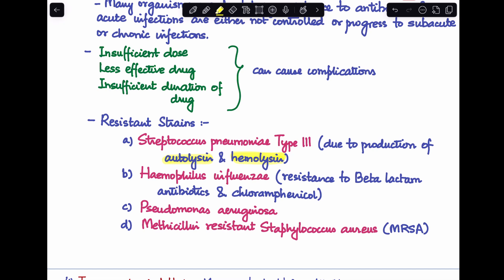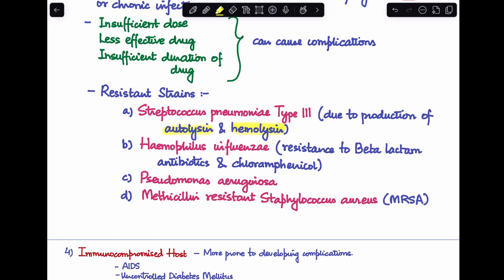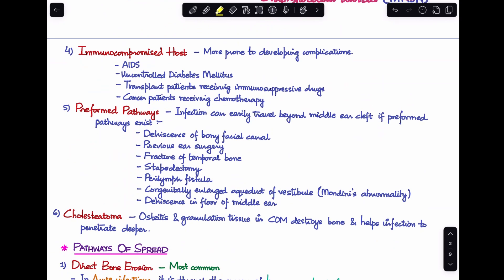These are the common resistant strains that have been seen in relation to CSOM, and these organisms are responsible for causing complications of CSOM as well. Next is immunocompromised host. Immunocompromised hosts are more prone to developing complications because of their lowered immunity. And these are usually patients who are suffering from AIDS or uncontrolled diabetes mellitus, transplant patients who are receiving immunosuppressive drugs, cancer patients who are receiving chemotherapy.